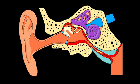If the eustachian tube becomes blocked or swollen, a vacuum of air builds up and the only elastic part of the system, the tympanic membrane, is sucked into the middle ear. The vacuum also causes thickening of the middle ear mucosa, which produces an effusion that fills the middle ear cavity. At first the fluid is thin and watery, but after a few weeks it can become thick and glue-like.